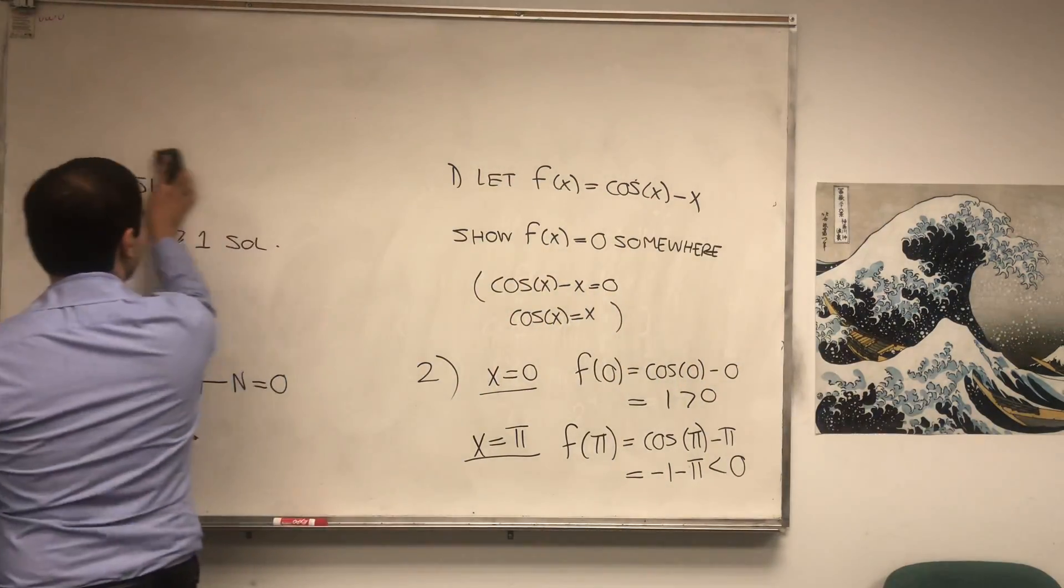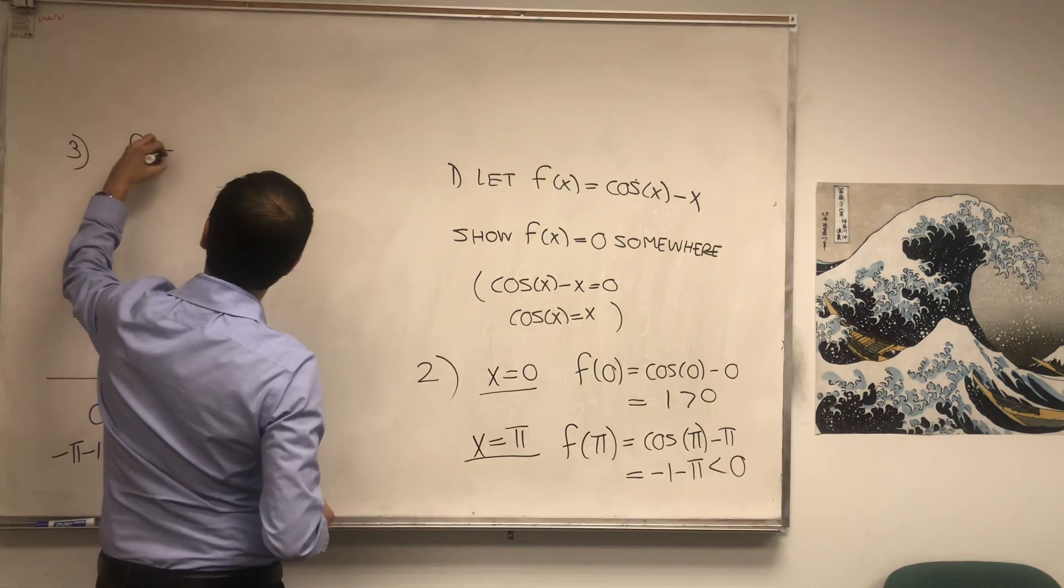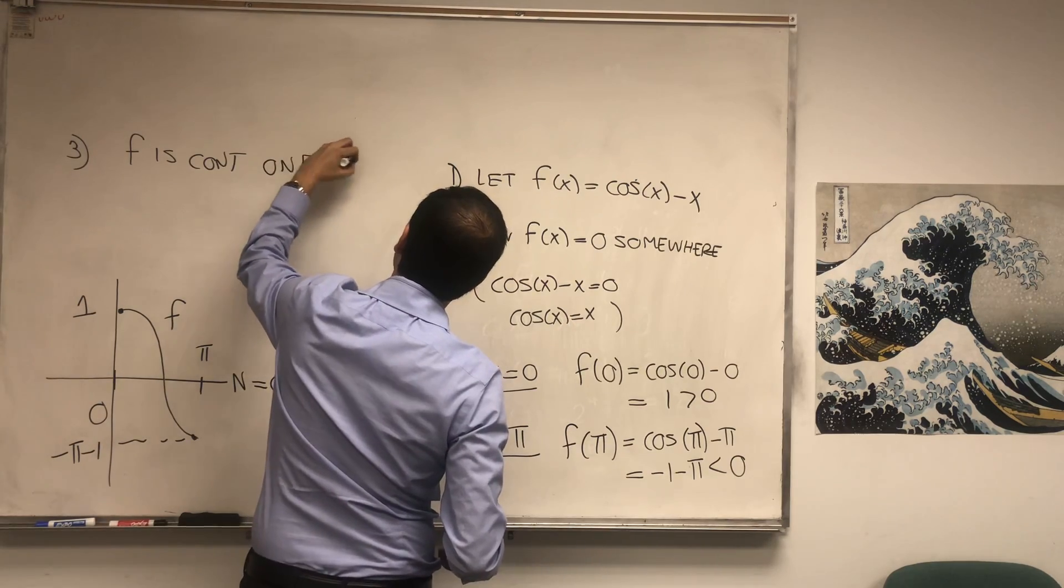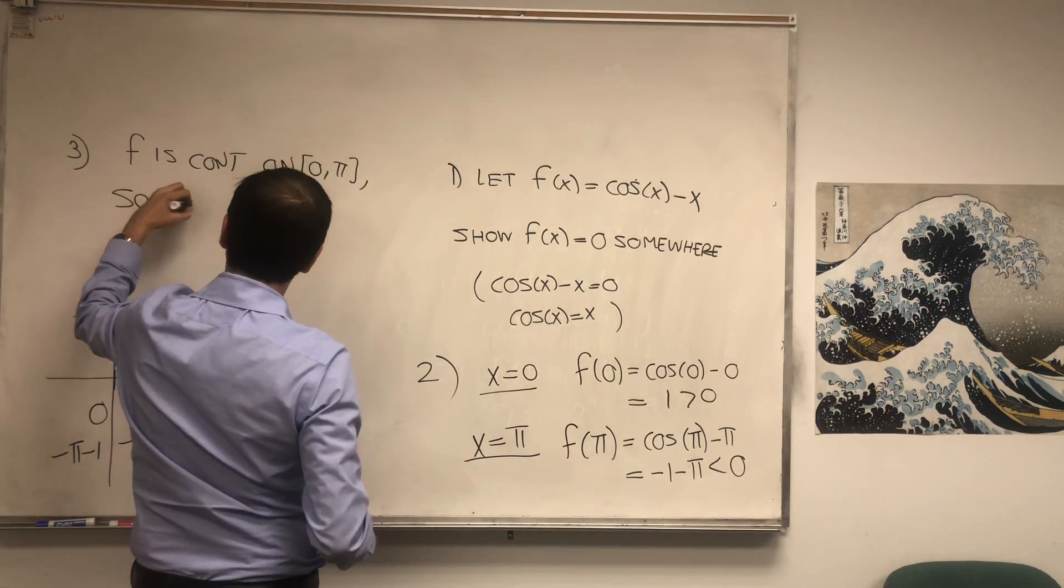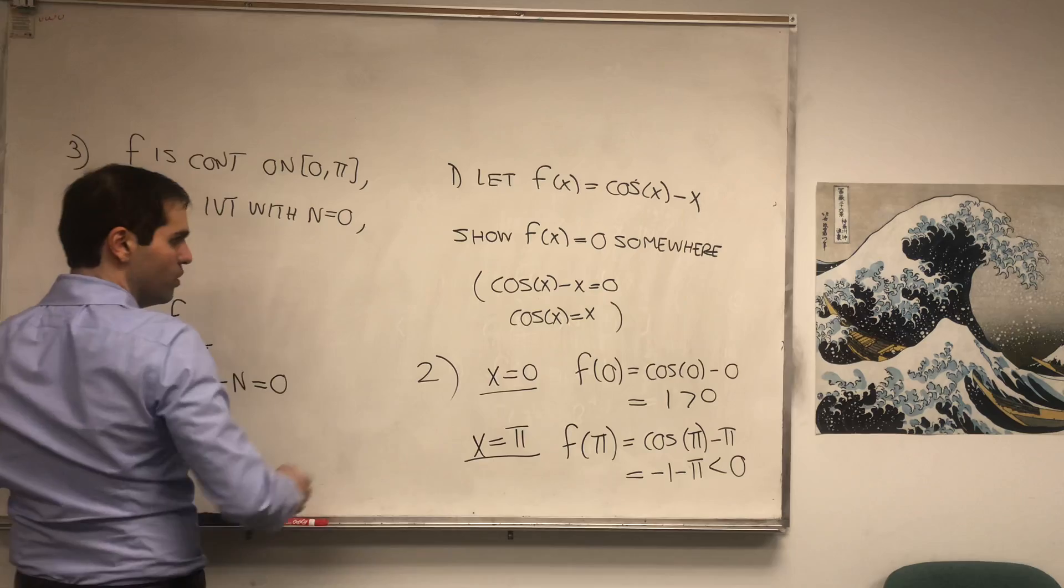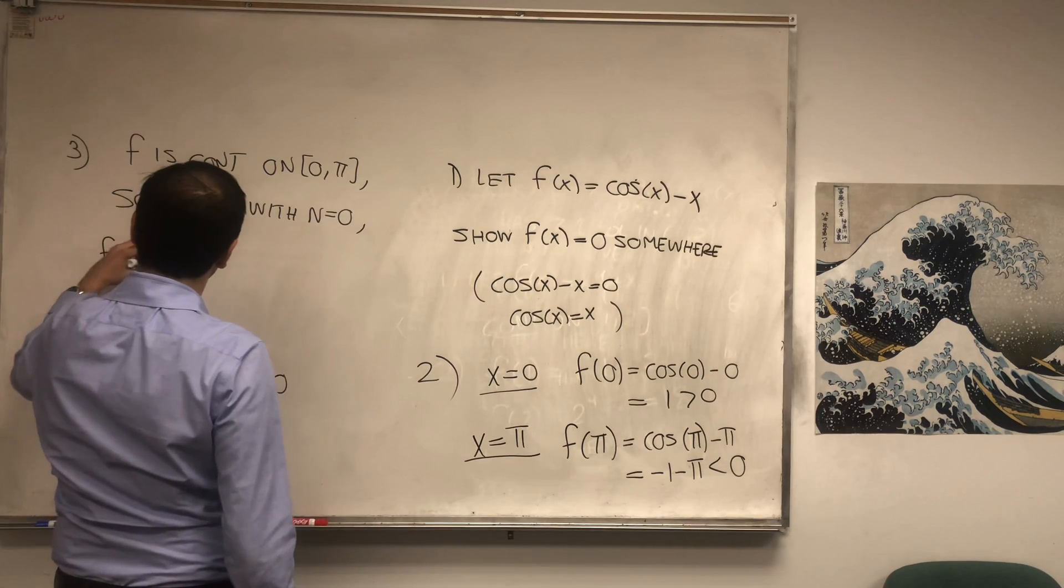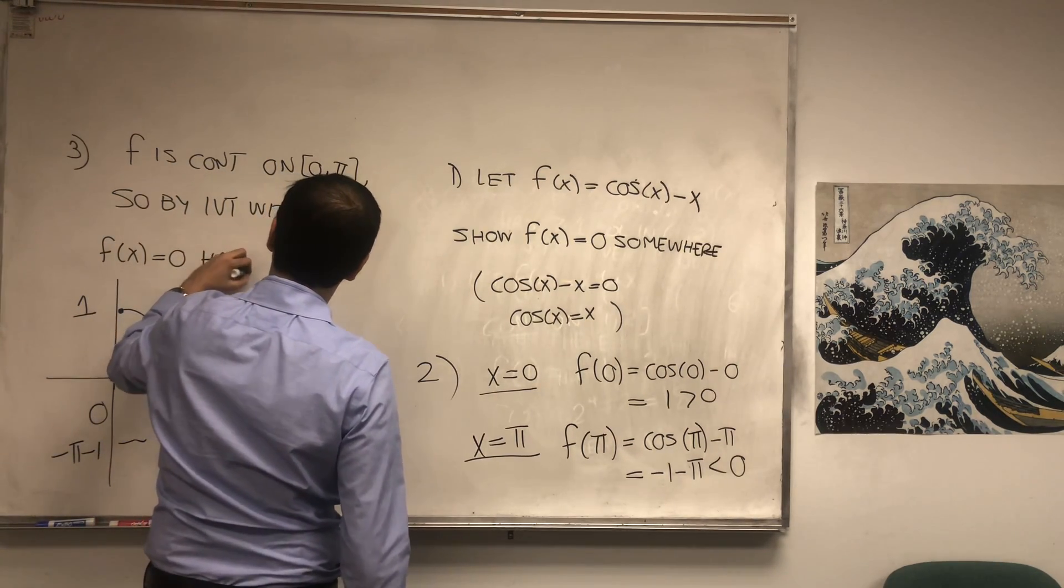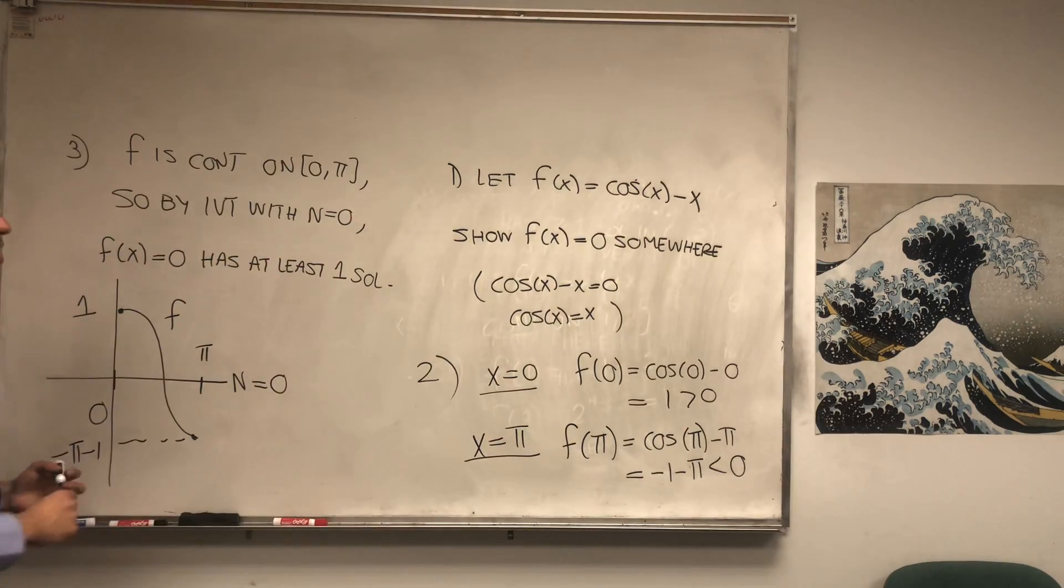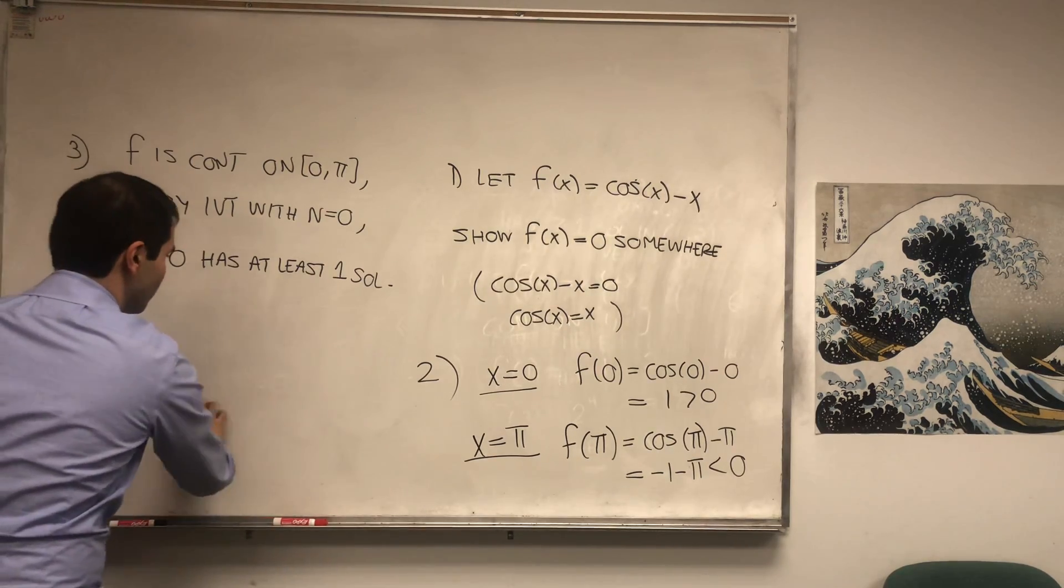So let's finish this. So in other words, f is continuous on [0,π]. So by the Intermediate Value Theorem, with n equals zero, which is between f(0) and f(π), we get that f(x) = 0 has at least one solution. And therefore, this function cos(x) has to cross the line y equals x somewhere.